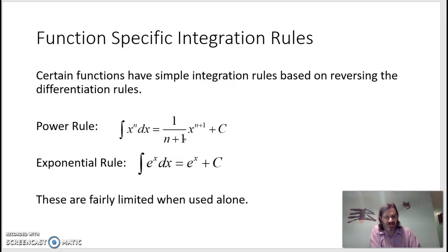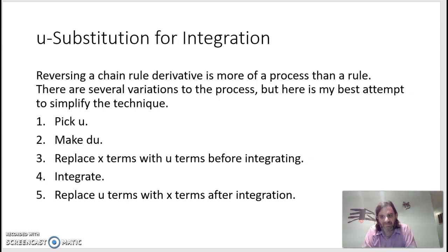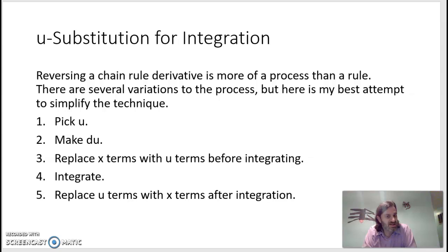U-substitution backtracks a chain rule. It's a reversal of the chain rule derivative, but it's more of a process than a single rule. Even with the chain rule we can write down a generic composite form, so we have a list of steps that can vary. In our examples, we'll pick a u, make a du, replace all the x's with u's, perform the integration using known rules, and then convert back to x's.